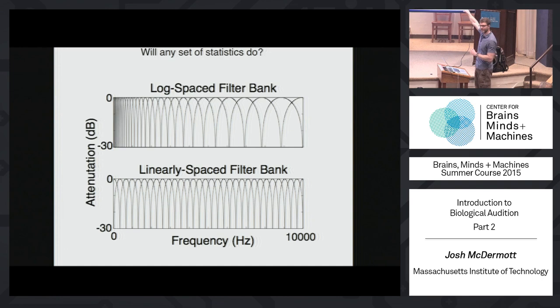The kinds of filter banks you see in biological systems are better approximated by something that's logarithmically spaced than something that's linearly spaced. The filters at high frequencies are a lot broader than the filters at low frequencies. So we can ask what happens if we swap in a filter bank that's linearly spaced — more closely analogous to an FFT.